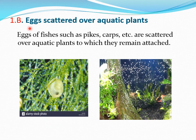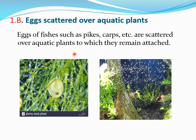Next, eggs scattered over aquatic plants: As you can see in the diagram, some fishes such as spikes and carps scatter their eggs over aquatic plants, where the eggs remain attached. This is shown in the diagram.